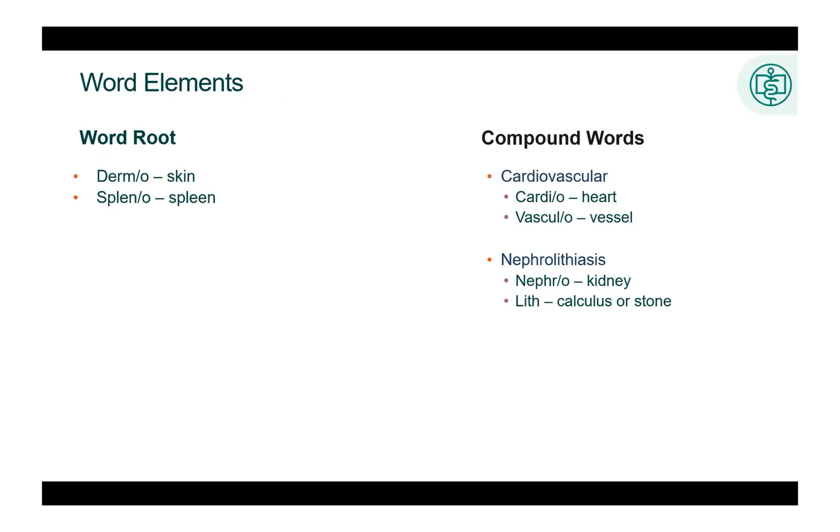An example of a compound word is cardiovascular. Cardio means heart. Vascular means vessel. Cardiovascular is pertaining to the heart and blood vessels. Another example is nephrolithiasis. Nephro is the kidney, and lith is a calculus or stone. Nephrolithiasis is a disorder characterized by stones in the kidney.